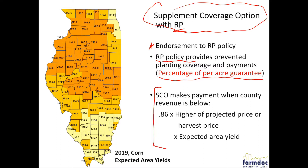SCO will make a payment if the county revenue is below the 0.86 coverage level times the higher of projected or harvest price. Harvest price is only included for RP — RP with Harvest Price Exclusion would not include that — times the expected area yield.